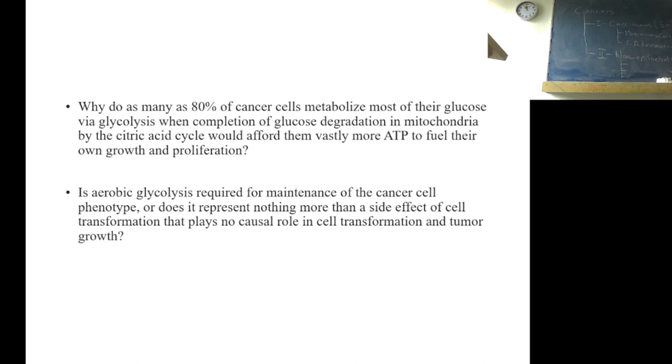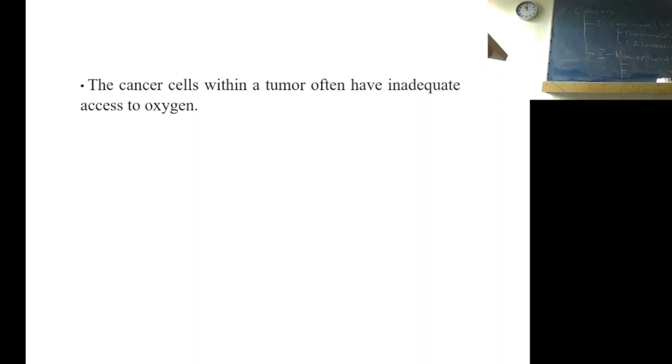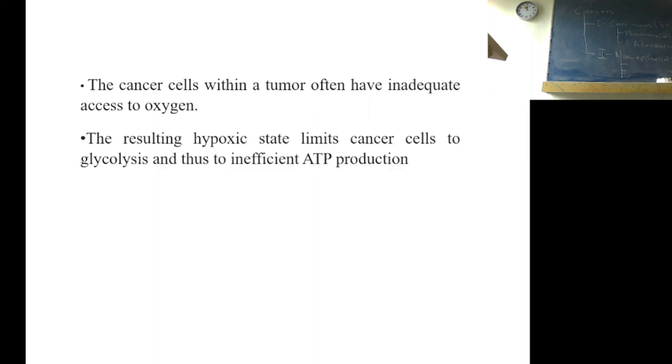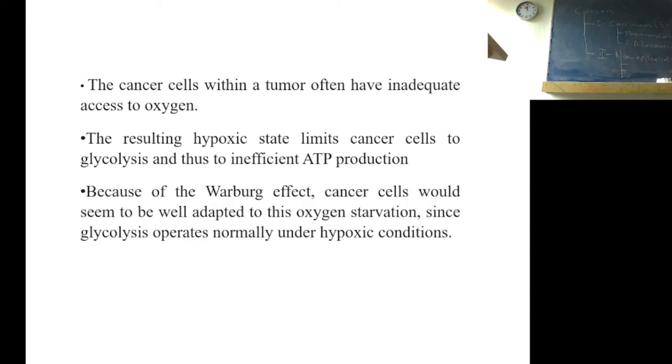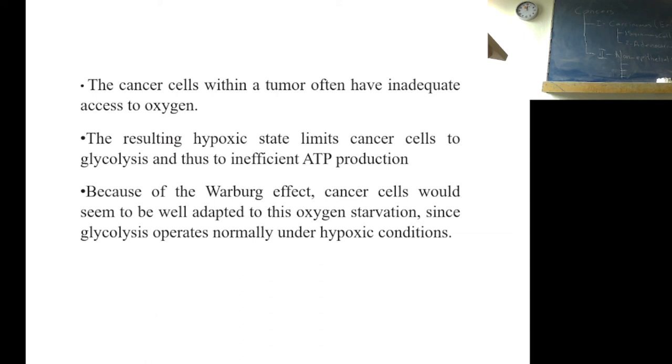Is aerobic glycolysis required for maintenance of cancer cell phenotype or does it represent nothing more than a side effect of cell transformation that plays no causal role in cell transformation or growth? The cancer cells within a tumor often have inadequate access to oxygen. The resulting hypoxic state limits cancer cells to glucose and thus have inefficient ATP production. Because of Warburg effect, cancer cells would seem to be well adapted to this oxygen starvation since glucose operates normally under hypoxic conditions. Still, this fails to explain why cancer cells, even when provided with abundant oxygen, do not take advantage of this oxygen to generate ATP in far larger quantities.